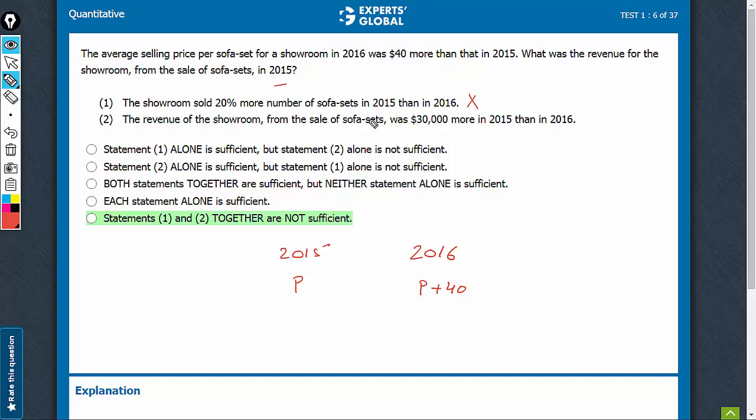Statement 2 says the revenue was $30,000 more. There are three variables total: R = P × N, where R, P, and N represent revenue, price, and number of units. For 2015, we have R = P × N. For 2016, R minus 30,000 equals P plus 40 times the units sold.